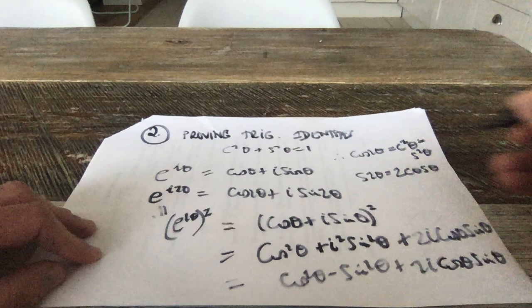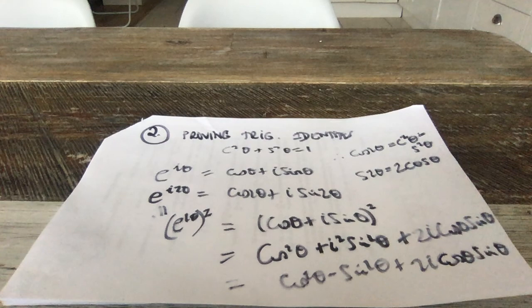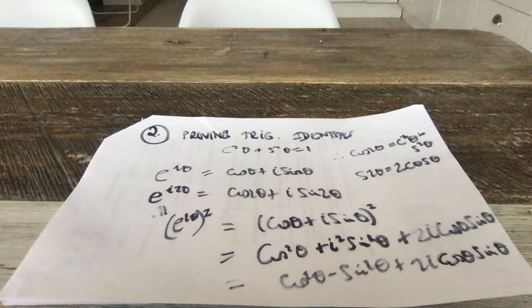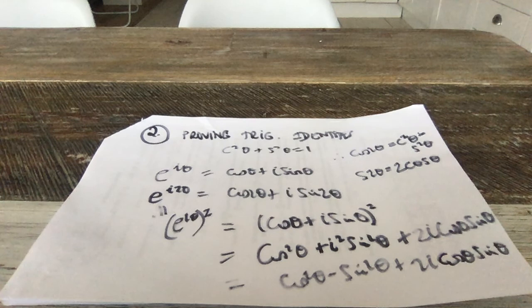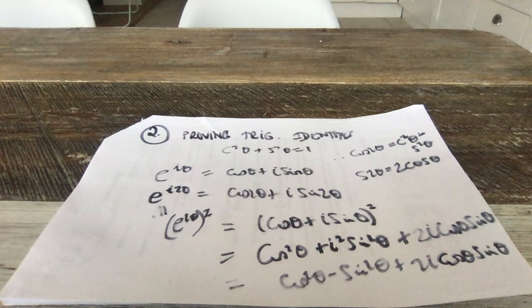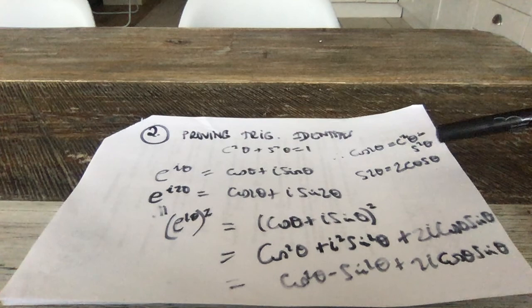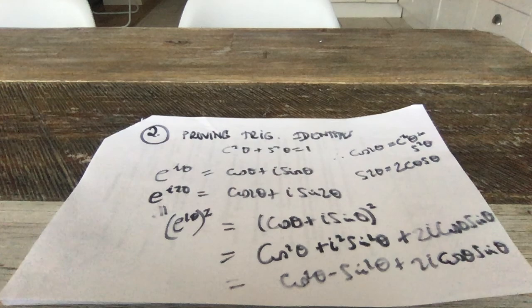There are other ways to prove these identities, but using complex exponentials is the simplest way. These trigonometric identities occur a lot more frequently than you think in engineering analysis, and you need to get comfortable using them. It makes life a lot easier. You can prove them very easily using complex exponentials — that's a very nice result.